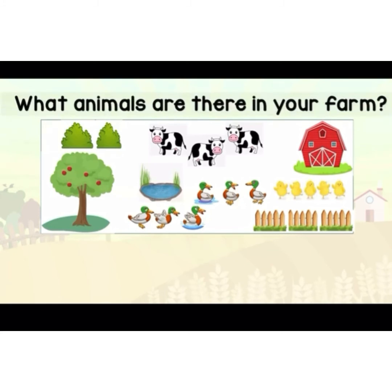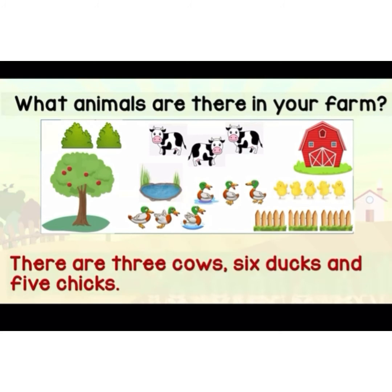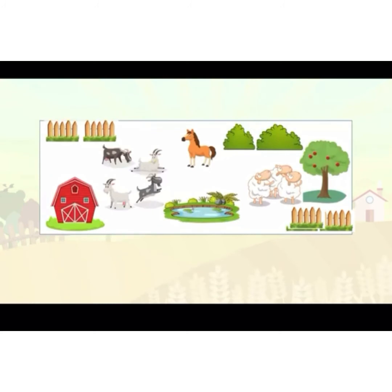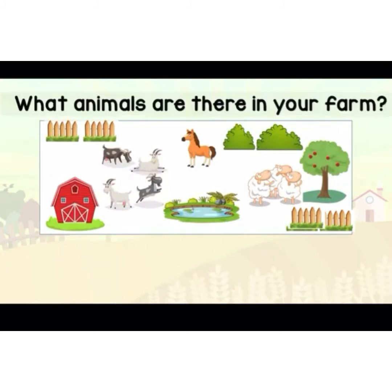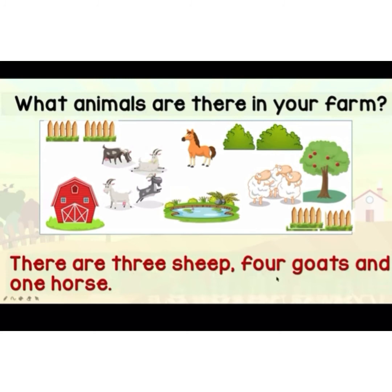Jom kita buat latihan sikit — what animals are there on your farm? You can say: there are cows, there are ducks, there are chicks. For example: there are three cows, six ducks, and five chicks. Ingat, di awal ayat kena huruf besar, di akhir kena letak full stop, dan untuk memisahkan objek kena letak comma. There are three sheep, four goats and one horse — ingat sheep tak berubah ya.